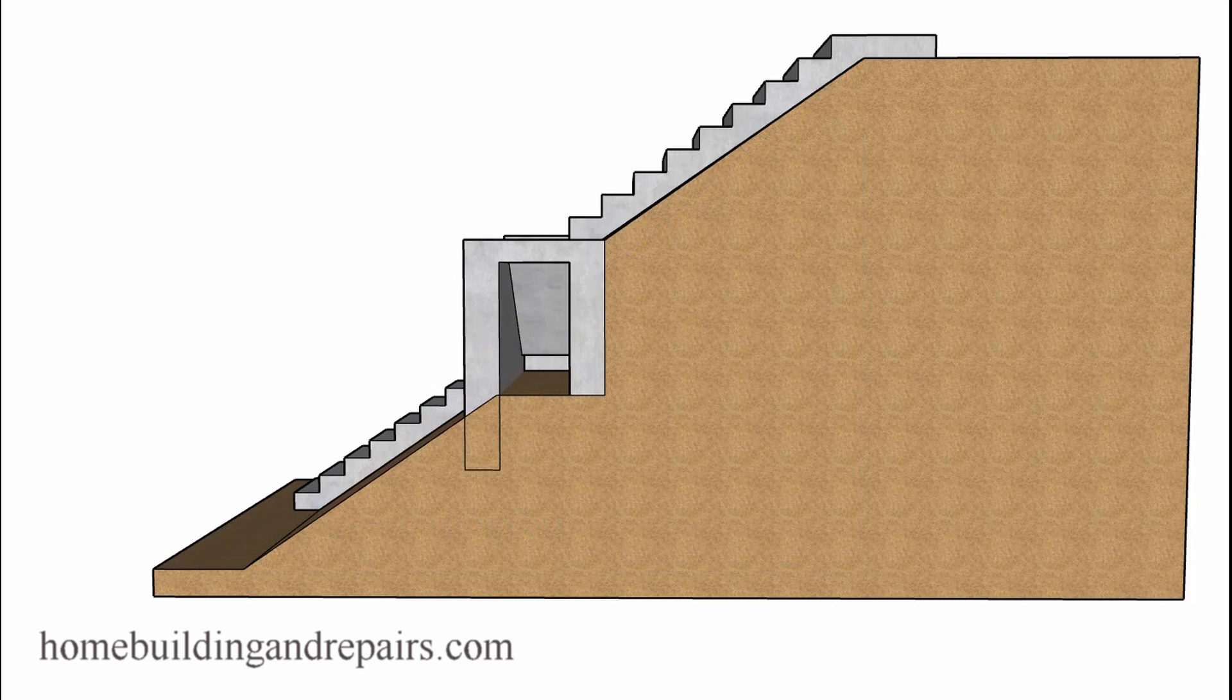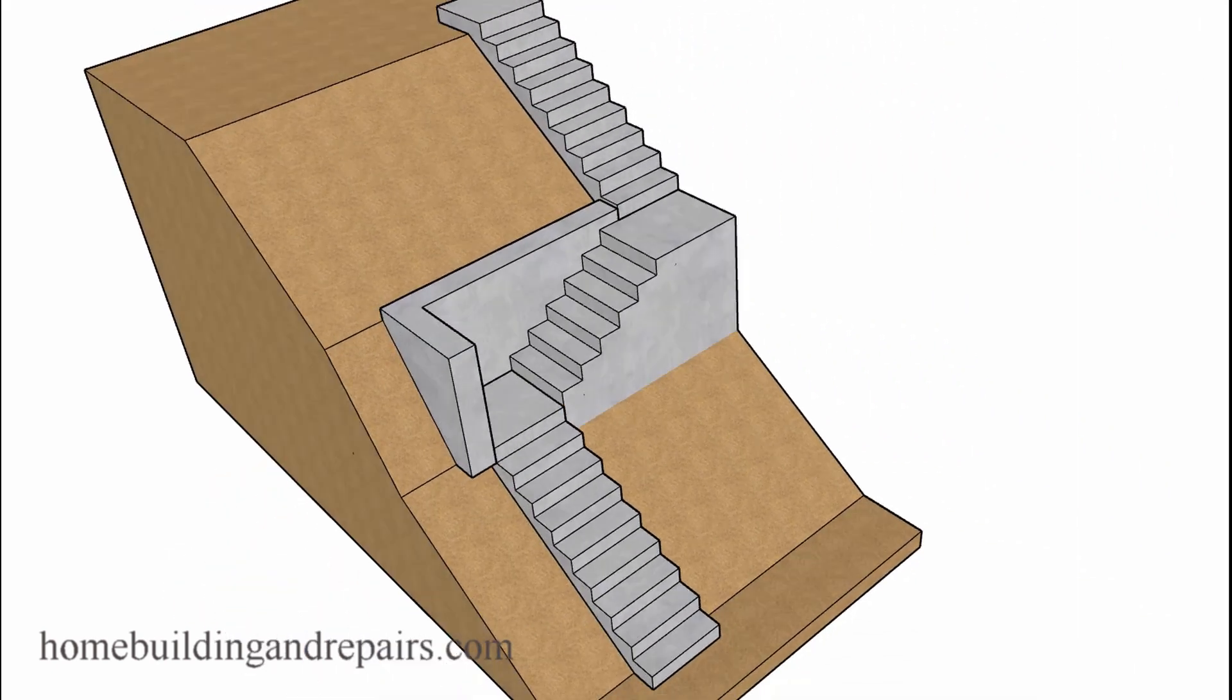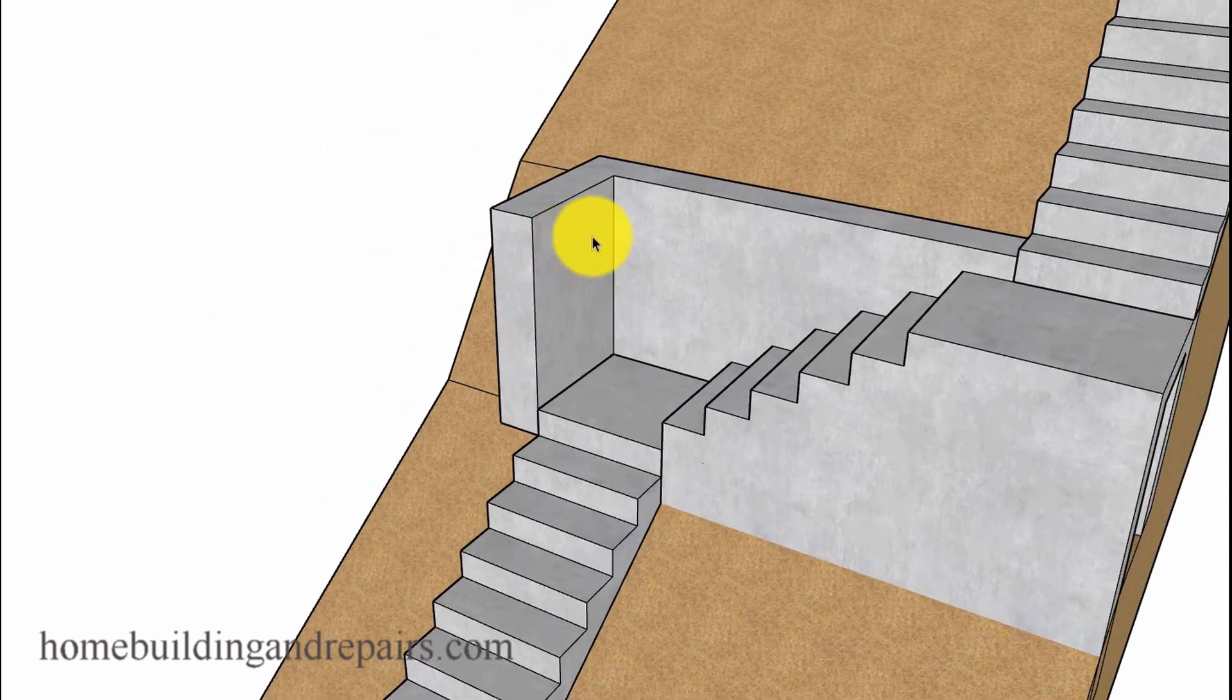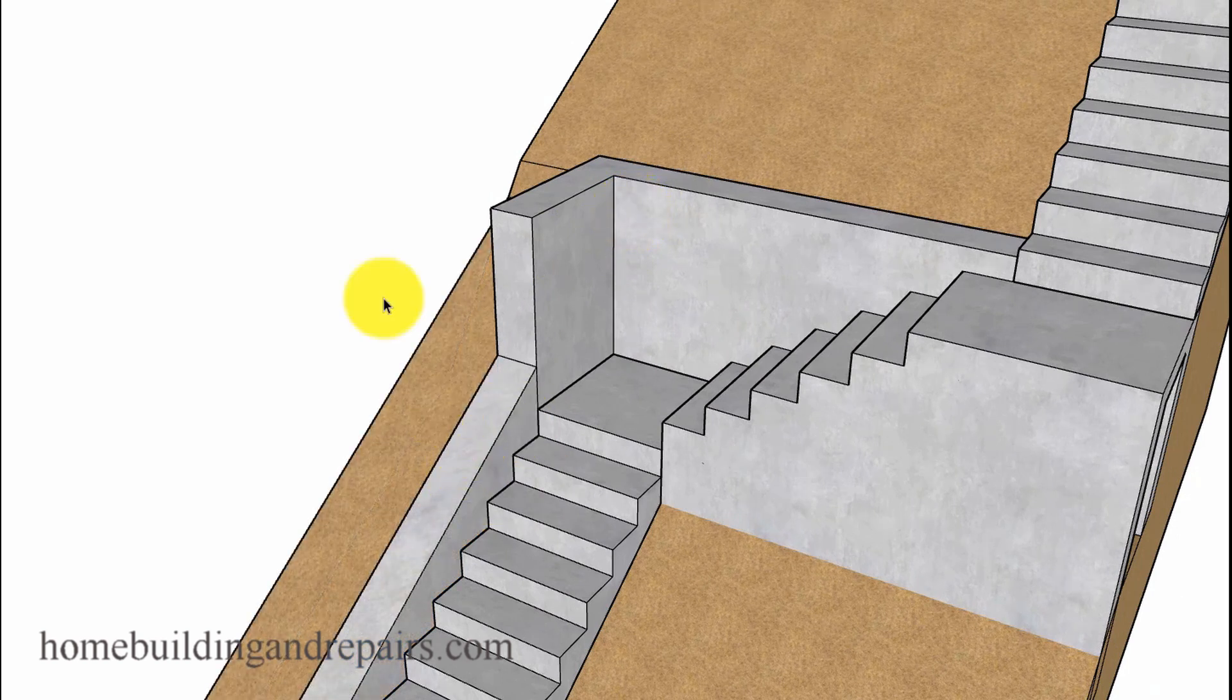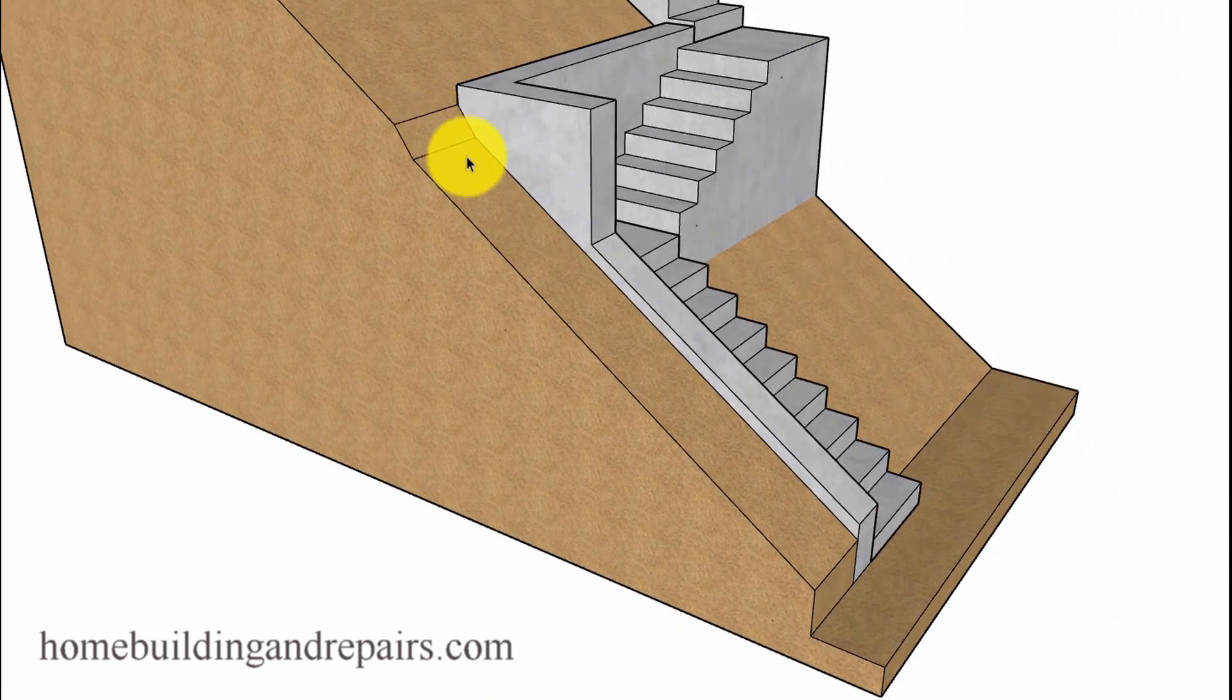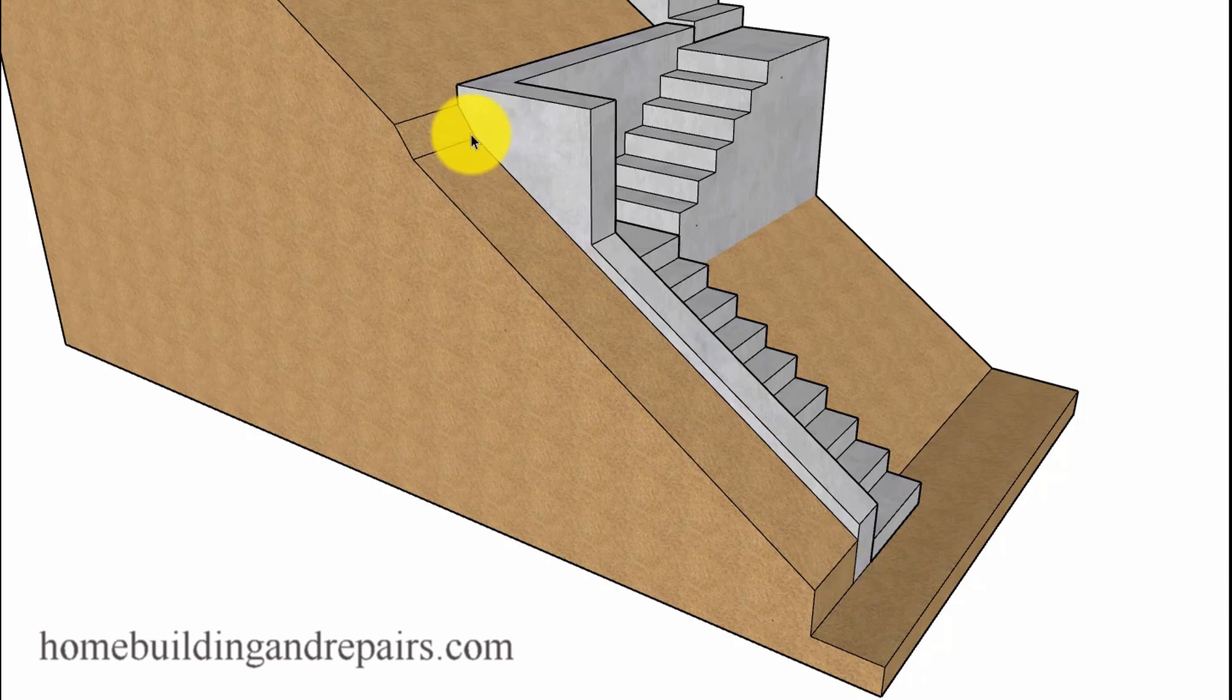Another thing you might need to do is add additional retaining walls. Here we have one coming off the side. Even if you're going to build curb walls like this, this is going to allow you to put a slope here that isn't going to be as steep.